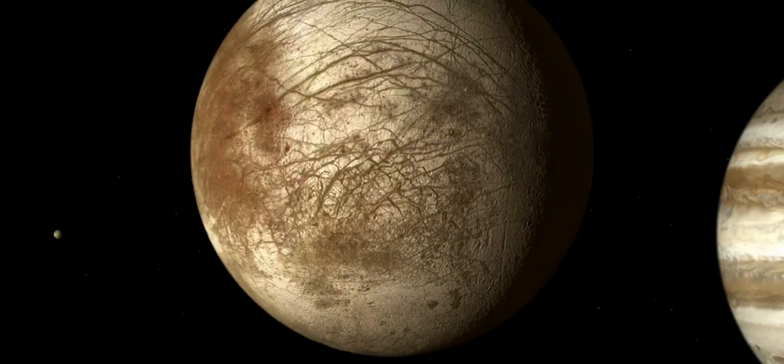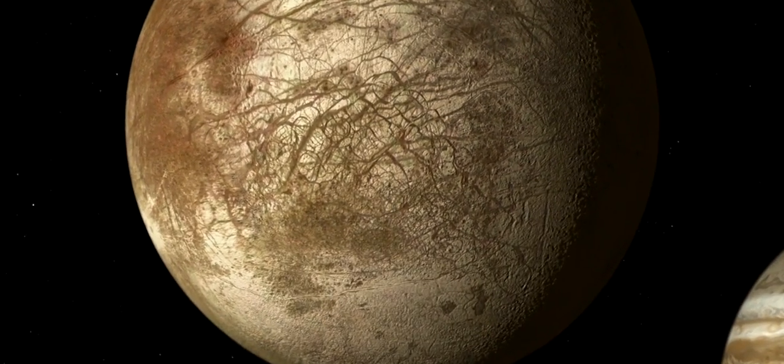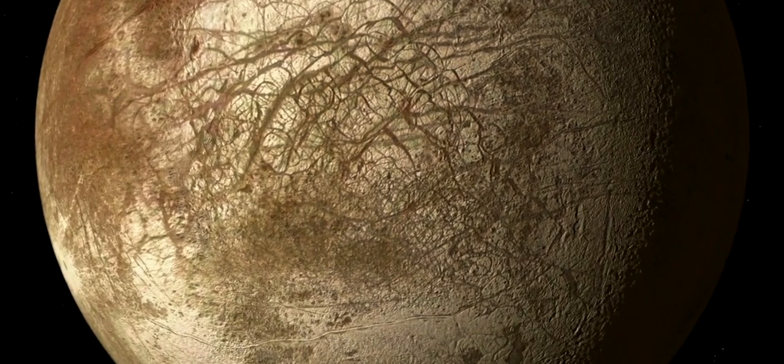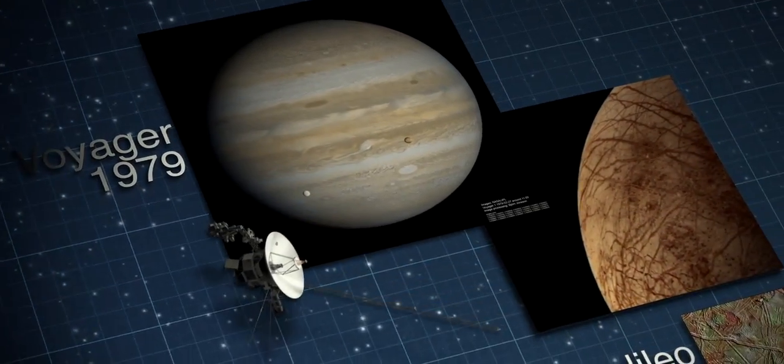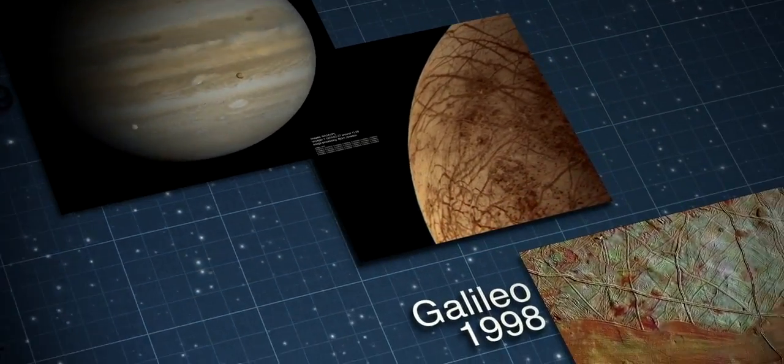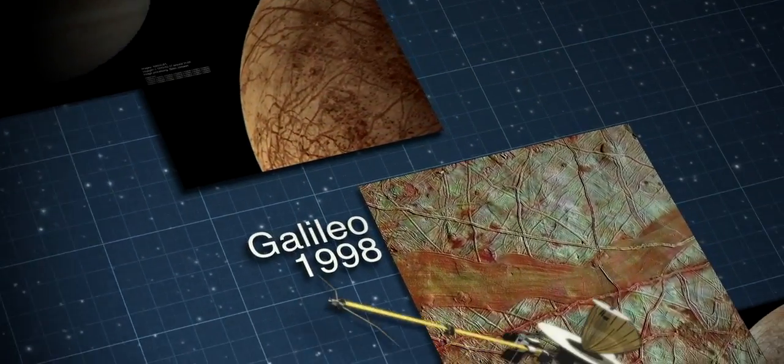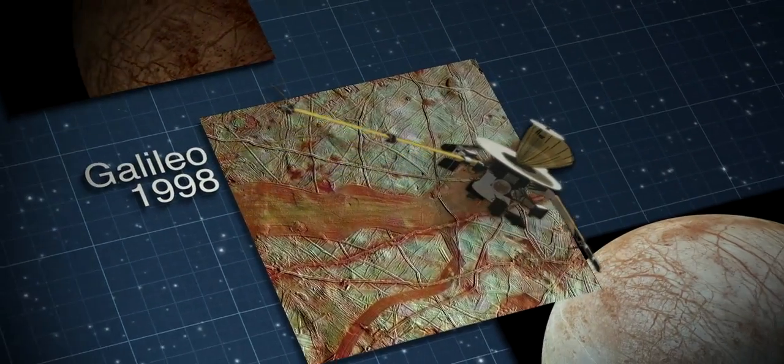So how do we think we know that Europa's ocean exists? Well, it's a combination of using telescopes on the ground and having spacecraft that have flown by Europa and collected data about the surface, about the interior structure, and about the magnetic field around Europa. And the combination of those data sets leads us to a high degree of confidence that this global liquid water H2O ocean is there today, and it's been there for much of the history of the solar system.